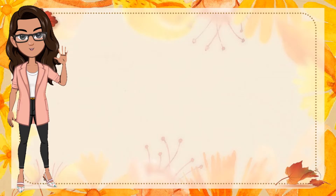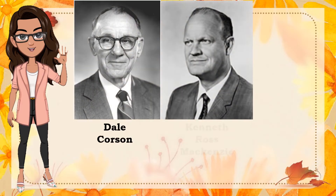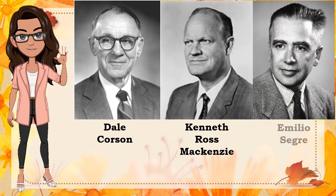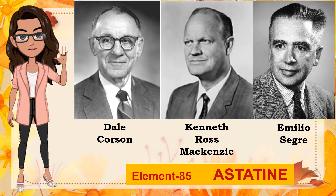In 1940, Dale Corson, Kenneth Ross McKenzie, and Emilio Segrè discovered the element with atomic number 85. They bombarded atoms of bismuth, with atomic number 83, with fast-moving alpha particles in a cyclotron. A cyclotron is a particle accelerator that uses an alternating electric field to accelerate particles that move in a spiral path in the presence of a magnetic field. Element 85 was named astatine, from the Greek word astatos meaning unstable.